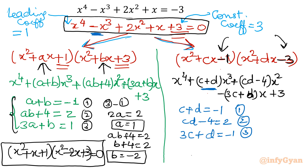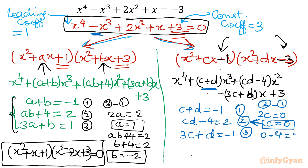Doing equation 3 minus equation 1: 2c = 0, so c = 0. Substituting c = 0 into equation 2: 0 − 4 = 2, which gives −4 = 2. That is incorrect and cannot be possible, so this system of equations is inconsistent — no solution from this set.